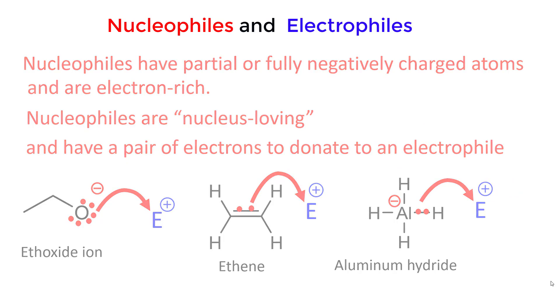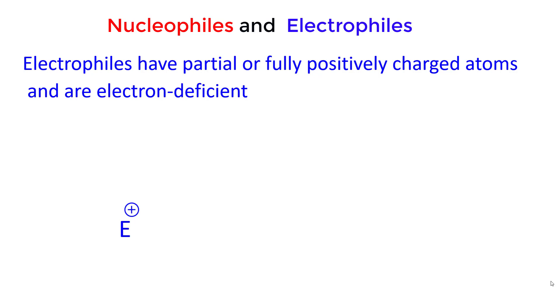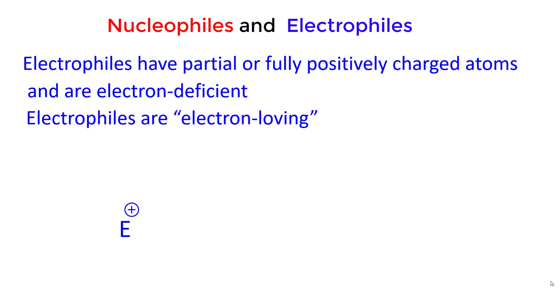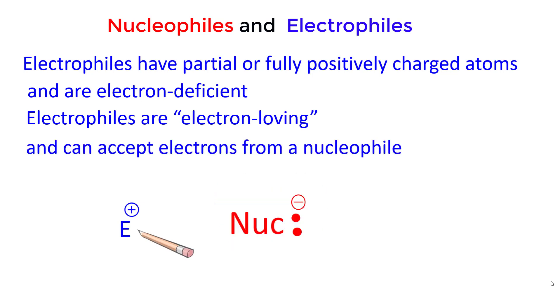Electrophiles can have partial or full positively charged atoms and are electron deficient. Electrophiles are electron loving and accept electrons from a nucleophile.